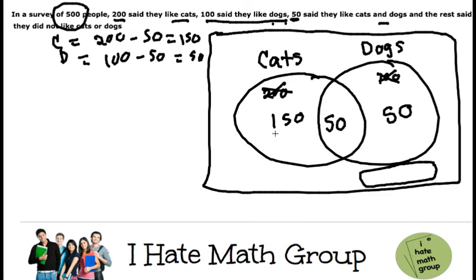Don't forget, how many people do I have in my circles? 150 plus 50, that's going to be 200, plus 50, that's going to be 250. Well, 500 people minus 250, in total I have 250. That's going to be the rest.